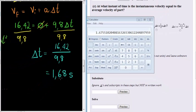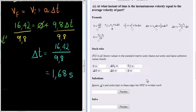So after 1.68 seconds, the instantaneous velocity will equal the average velocity. I'm going to save you some time because I'm sure you know how to enter this by now.